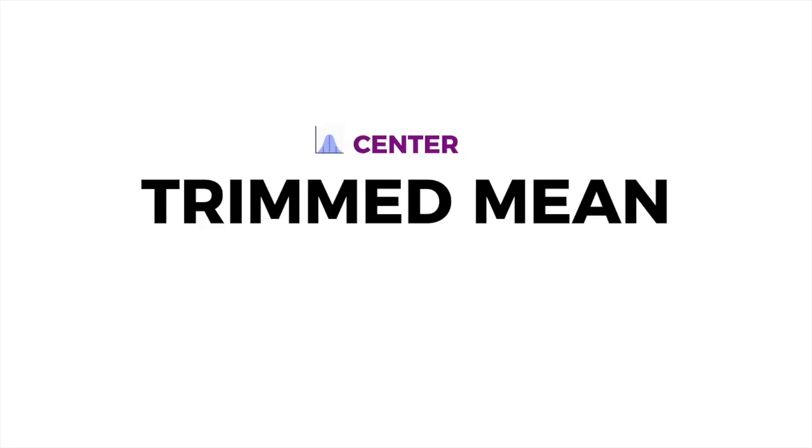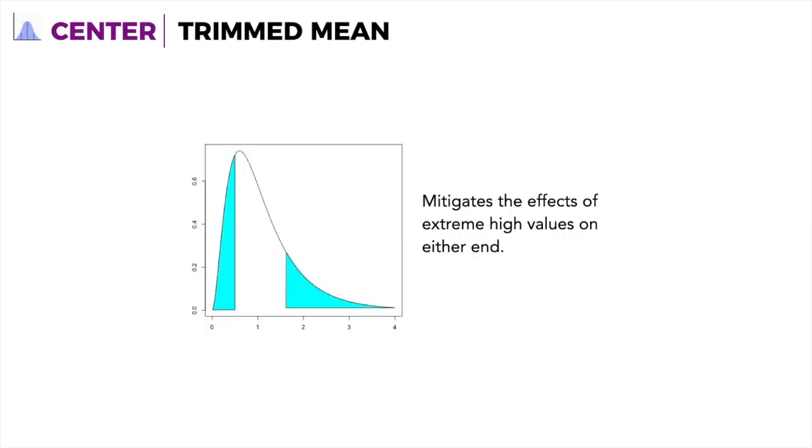The last measure of center is trimmed mean. Earlier, in mid-range, we only included the highest and lowest values. However, for trimmed mean, we're mitigating the effects of extreme high values on either end. It removes the extreme values, the highest and the lowest, from the whole data set. Since it's called mean, after you remove these values, you get the mean out of the remaining data set.